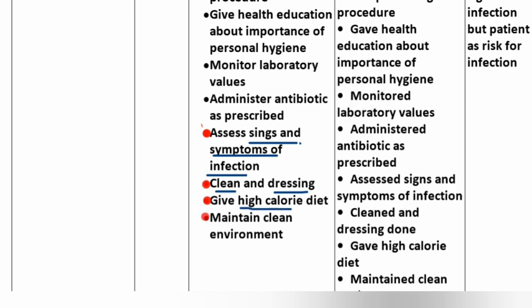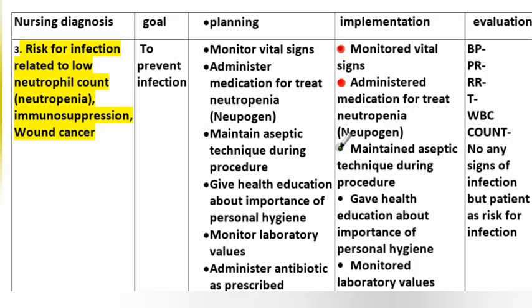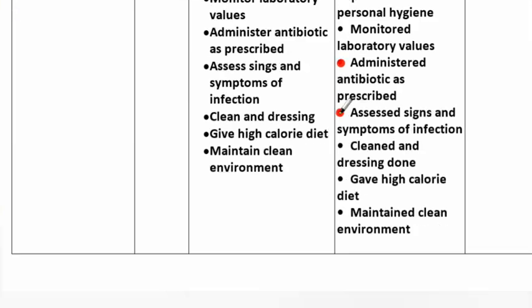Give high calorie diet. Implementation: monitored vital signs. Administered medication to treat neutropenia. Maintained aseptic techniques during procedures. Gave health education about importance of personal hygiene. Monitored laboratory values. Administered antibiotics as prescribed. Assessed signs and symptoms of infection. Performed wound cleaning and dressing.